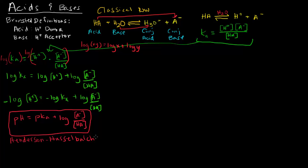The Henderson-Hasselbalch equation is very useful in biochemistry. It can tell us whether a particular group is protonated or not. There are three variables: pH, pKa, and the ratio of conjugate base to acid. If you know any two, you can solve for the third — for example, knowing pH and pKa lets you determine the base-to-acid ratio.